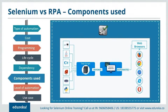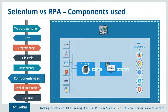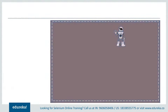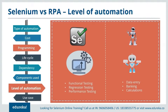Now let's talk about the major component used by these tools to automate a task. Selenium uses web drivers to automate any task — test scripts written in any programming language can be invoked and automated using Selenium WebDriver, which can run on different browsers like Chrome, Safari, Mozilla, and so on. Whereas RPA makes use of robots to complete a task. RPA bots help in automating data from different sources and saving it in the form of an Excel file in sequence. Regarding the level of automation: Selenium automates functional, regression, and performance testing, whereas RPA automates all clerical processes like data entry and calculations.